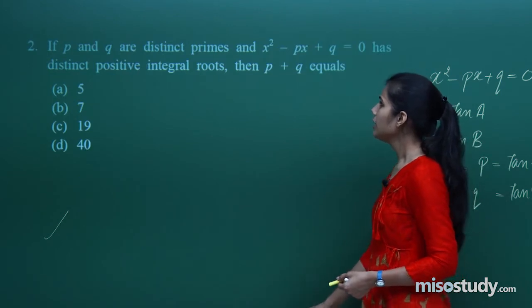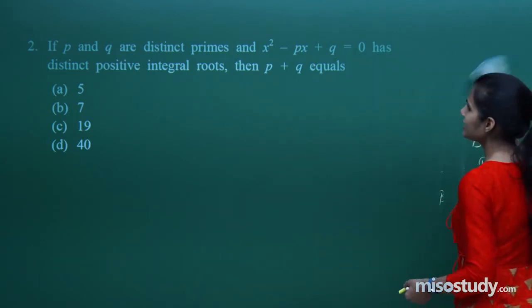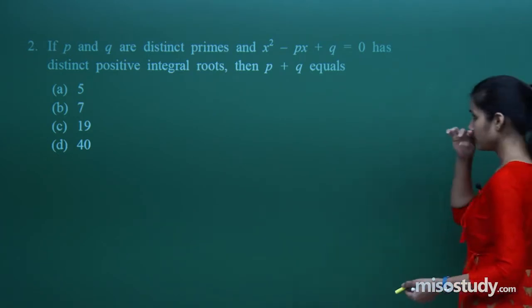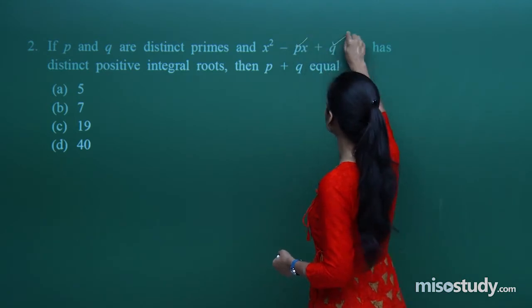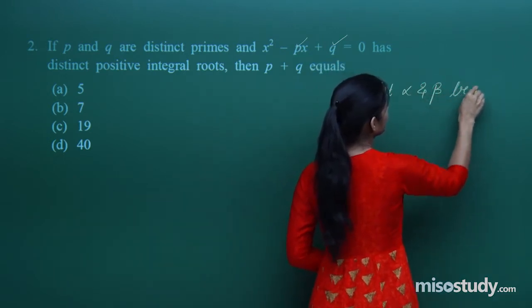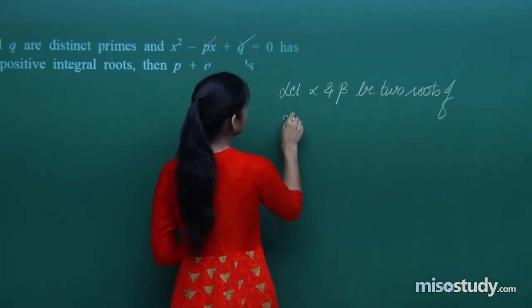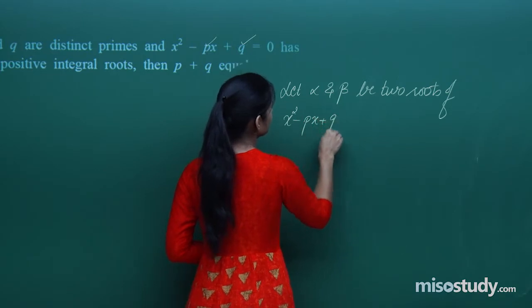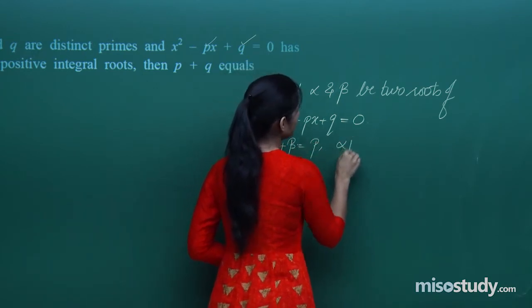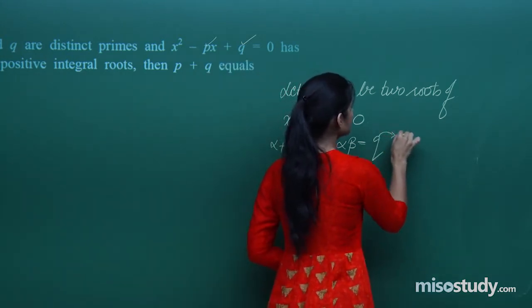Moving to the next question: p and q are distinct primes, and the equation x² - px + q = 0 has distinct positive integral roots. What is p + q? No information about the roots is given directly — only that p and q are primes. Let alpha and beta be the two roots. Sum of roots is p, product of roots is q.